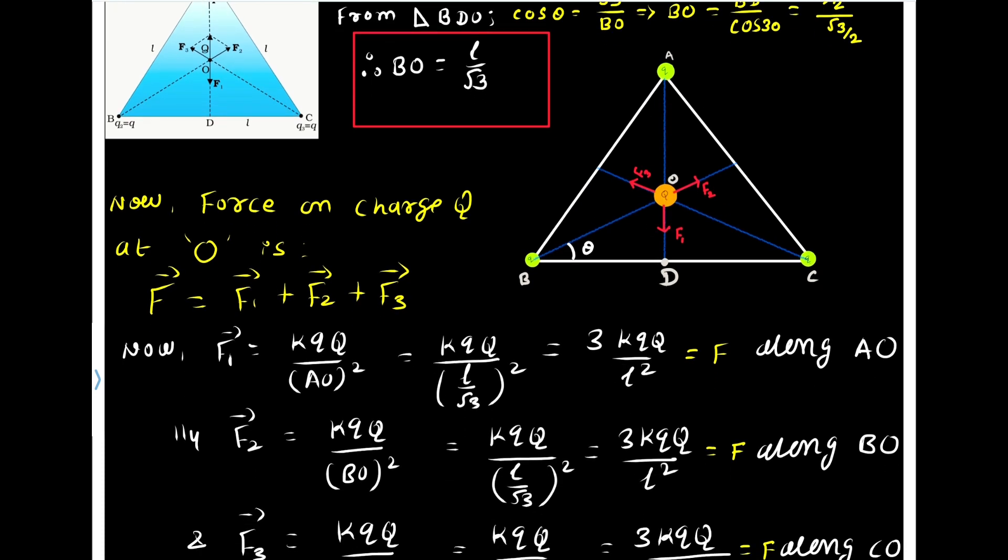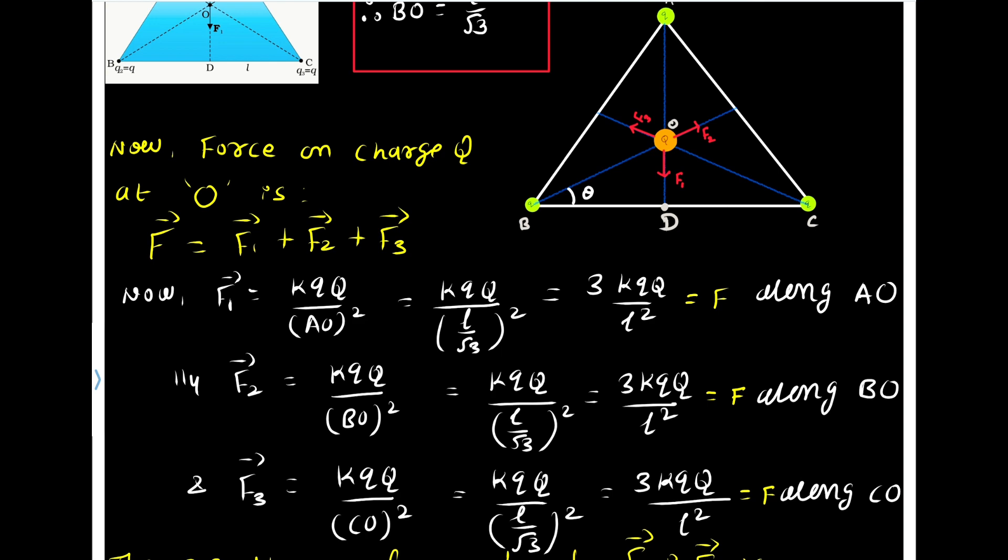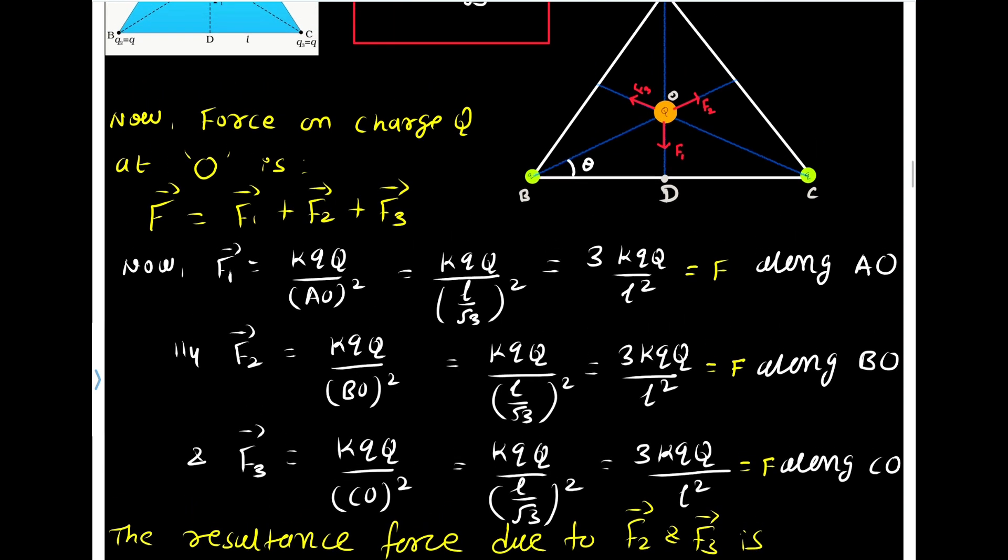Similarly, if we talk about F2 which is acting in this direction, then it is KQQ, the distance is OB square. The distance is OB or BO. So BO is nothing but L by root 3. So same answer we are getting and the direction of this force is along B to O. Similarly, the F3 can be calculated and its direction is along C to O. So here we can see that the magnitude of all the forces are equal and the directions are labeled.